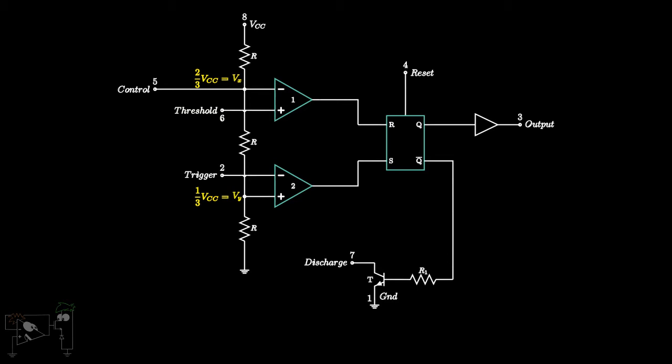If you see comparator 1, Vx is given to the inverting input. Hence, whenever the voltage at the threshold pin goes above Vx, that is 2 by 3 VCC, the output of the comparator V1 will go high, which is digital 1.